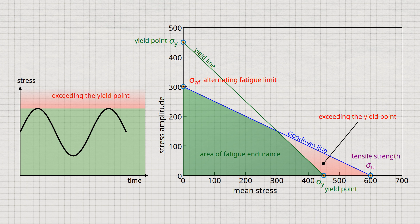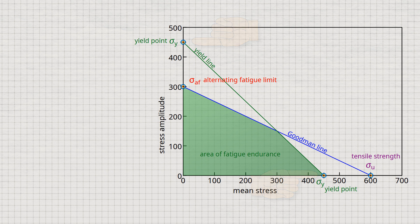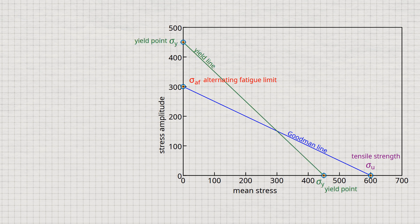This straight line is also called the yield line. The yield line is obtained by plotting the value of the yield point on both axes and connecting the two points with each other. In this way, two straight lines are obtained in the diagram — the Goodman line and the yield line — which limit the technically permissible area of fatigue endurance. In practice, all that is needed to draw up a fatigue limit diagram according to Hay is knowledge of the alternating fatigue limit and the tensile strength to determine the Goodman line, and the yield point to determine the yield line. With these three material parameters, the Hay diagram is completely defined.